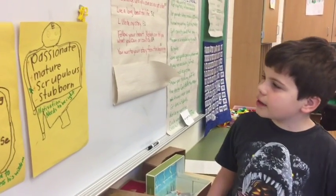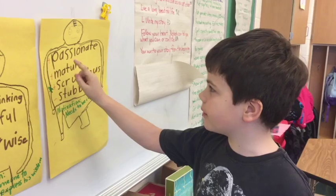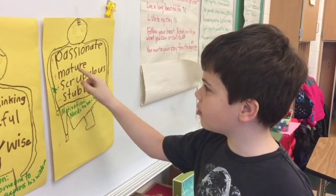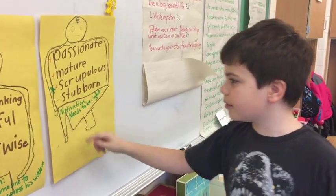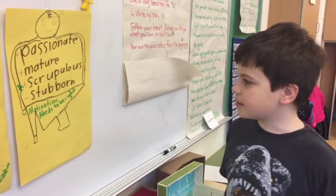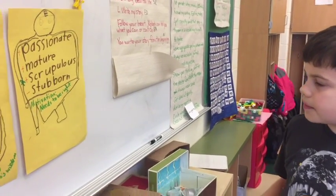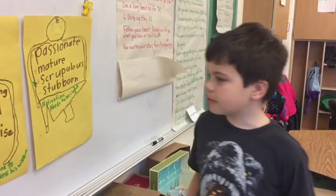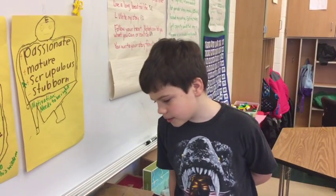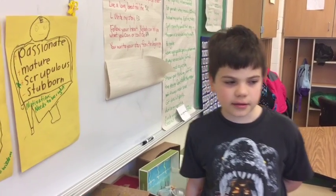Character E is the last one and his character traits are passionate, mature, scrupulous, stubborn. Motivation: needs to be right. We put the star near scrupulous because it's the dominant trait that our class had suggested. We look forward to meeting you in February. Don't be worried. Thank you.